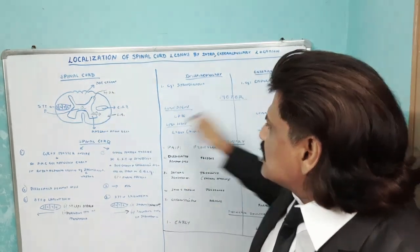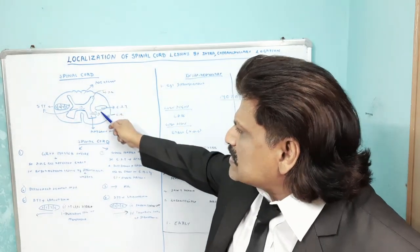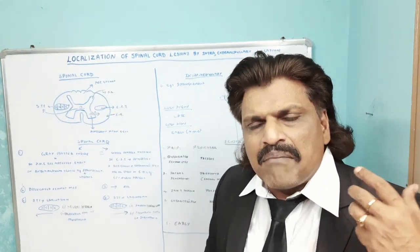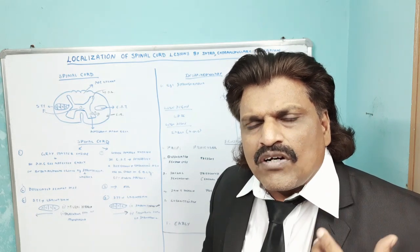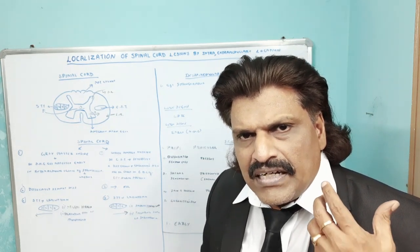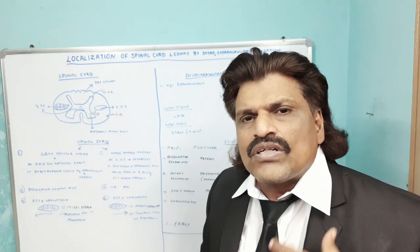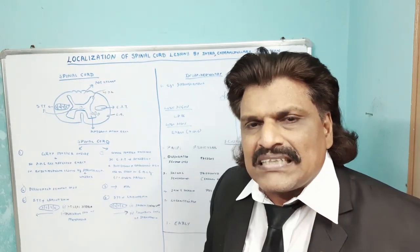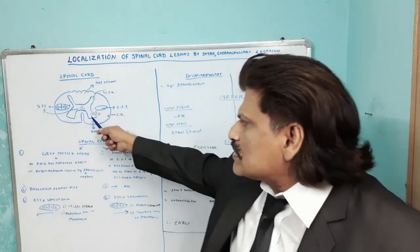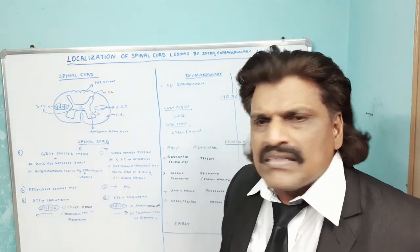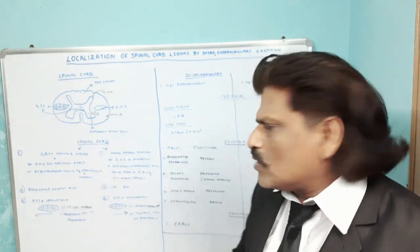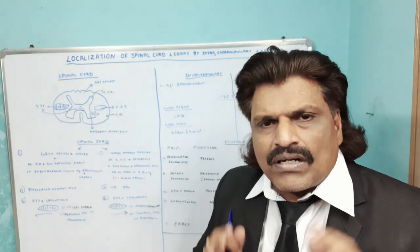Whereas in an extramedullary lesion, the first structure to get affected is the corticospinal tract — for example in epidural abscess. So the corticospinal tract lesion causes spasticity. Therefore intramedullary lesion causes lower motor neuron weakness, while extramedullary lesion causes upper motor neuron weakness.